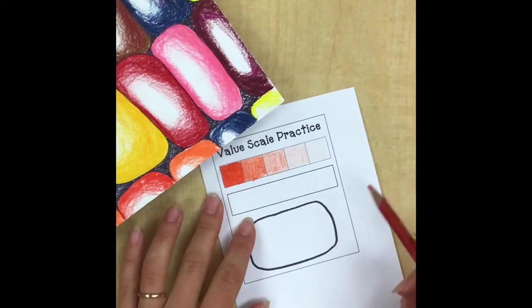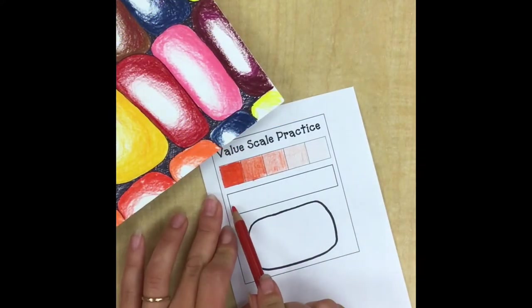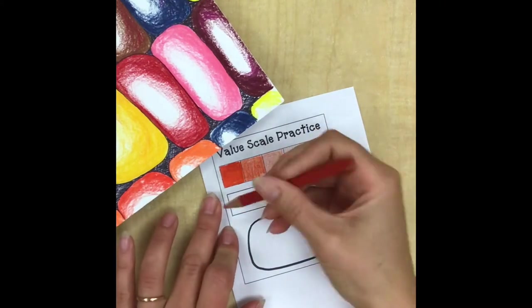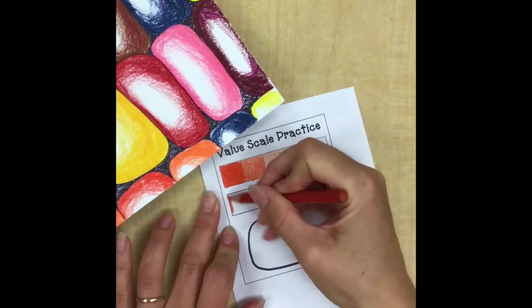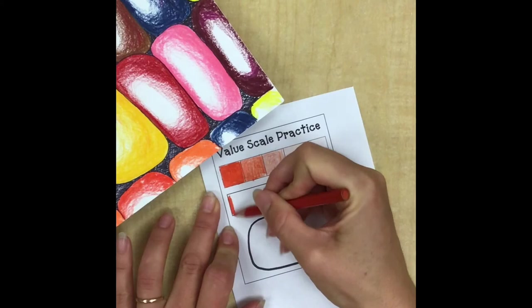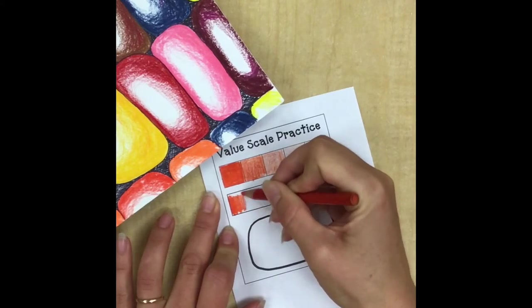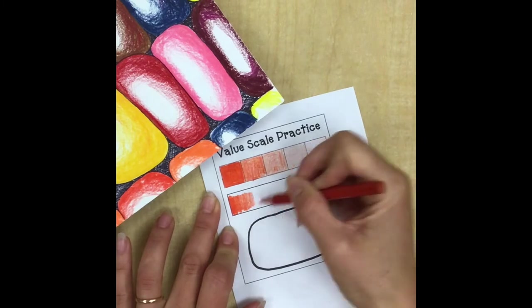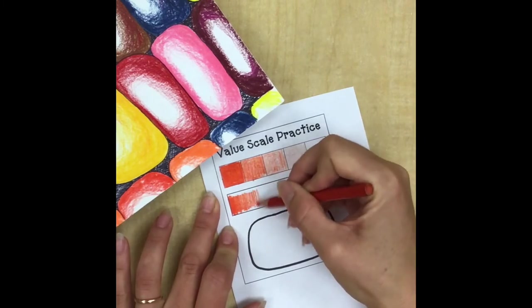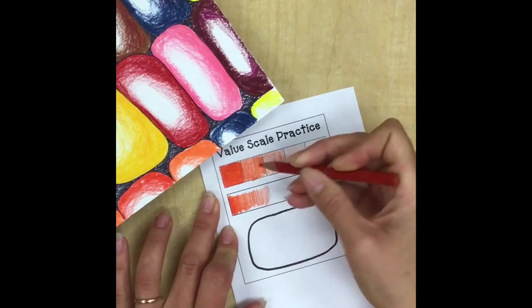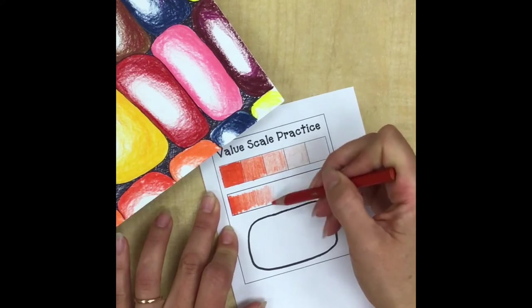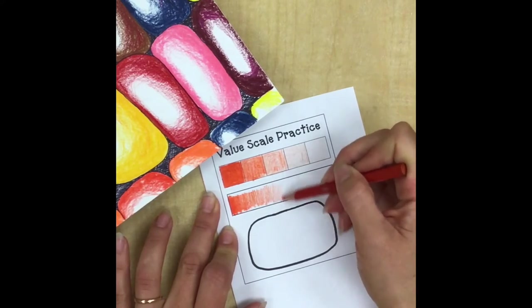Now this next box is going to be the same thing, except this time we're doing a gradual change of value - sometimes this is called a gradient. So I'm pushing hard on one end and then gradually lessening the pressure of my pencil as I move down the rectangle. Sometimes when I don't want to put very much pressure on my pencil, I hold the whole pencil way farther back, and that makes it harder to press hard so you can get a better light value.